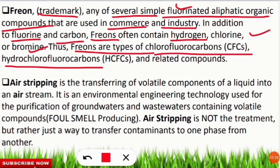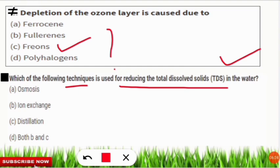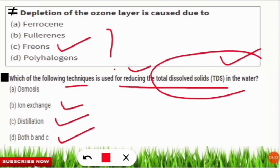The next question: which technique is used to reduce total dissolved solids present in water? The correct option is D — both ion exchange technique and distillation technique are used to reduce the amount of total dissolved solids present in water.